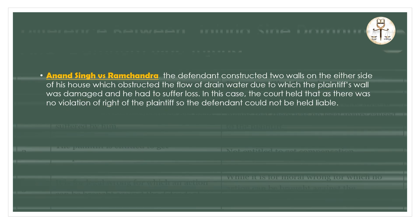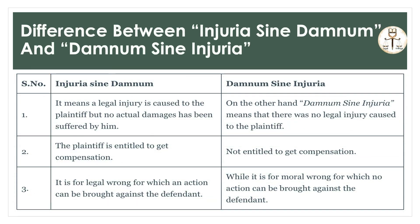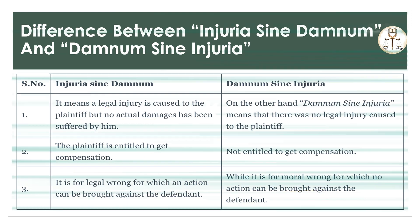We can better understand the difference between injuria sine damno and damnum sine injuria through a table. Injuria sine damno means a legal injury is caused to the plaintiff but there is no actual pecuniary loss. On the other hand, damnum sine injuria means there is pecuniary loss but no legal injury, which is why it is not recoverable. In injuria sine damno the plaintiff is entitled to get compensation, while in the other case the plaintiff is not entitled to compensation. Under injuria sine damno it is a legal wrong for which an action can be brought against the defendant, while in damnum sine injuria it is a moral wrong for which no action can be brought.